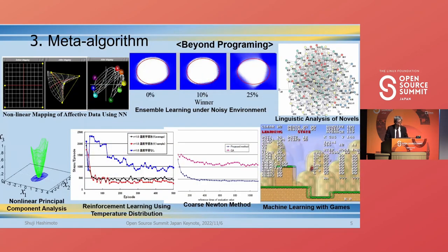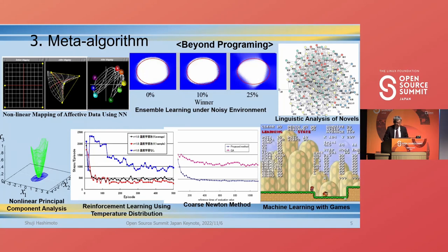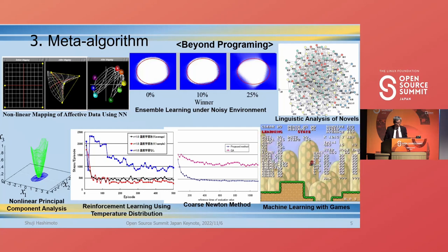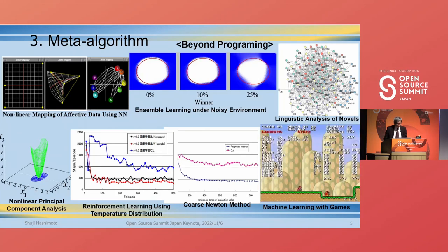Thirdly, we have been working on neural networks and data analysis in the field of information processing, which is a little more fundamental. This is an example of gaming skill acquisition with reinforcement learning. In addition, various attempts were made on the principles of new information processing related to human cancer. I'll explain later.